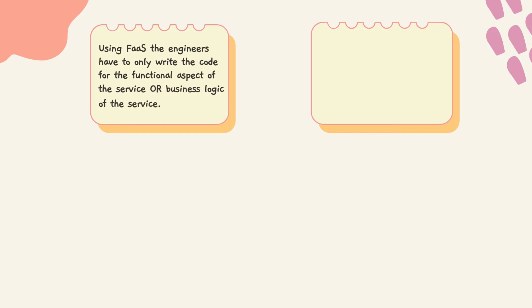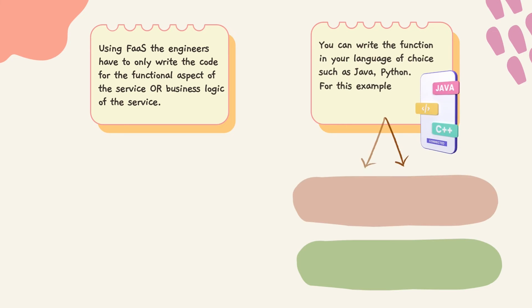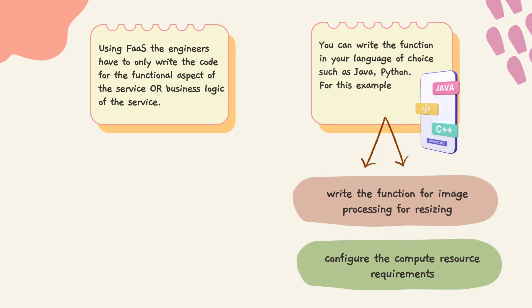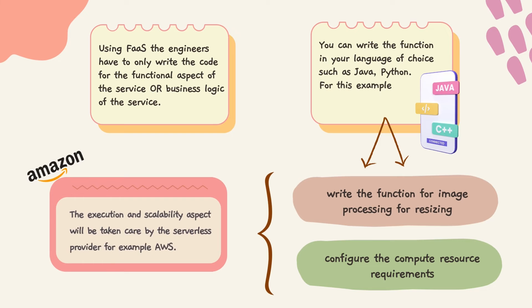Using FaaS — for example, AWS Lambda — engineers only need to write the code for the functional aspect of the service, or its business logic. You can write the function in your language of choice, such as Java or Python. For this example, you only need to write the function for image processing and resizing, and configure the compute resource requirements. The execution and scalability aspects will be taken care of by the serverless provider, such as AWS.